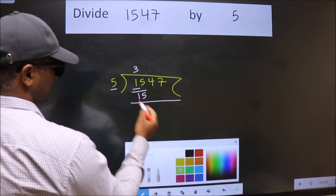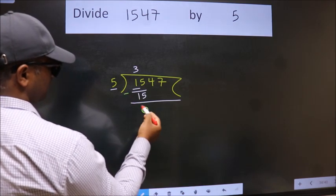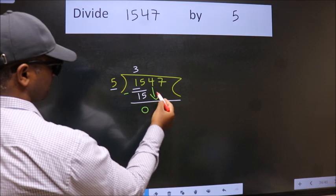Now, we should subtract. We get 0. After this, bring down the beside number.